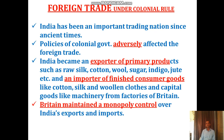Now we will understand foreign trade under colonial rule. India has been an important trading nation since ancient times. The policies of the colonial government adversely — meaning negatively — affected foreign trade. India became an exporter of primary products. They turned India into an exporter of primary products such as raw silk, cotton, wool, sugar, and indigo, and an importer of finished consumer goods. The twofold motive was there: exporter of raw material and importer of finished consumer goods.